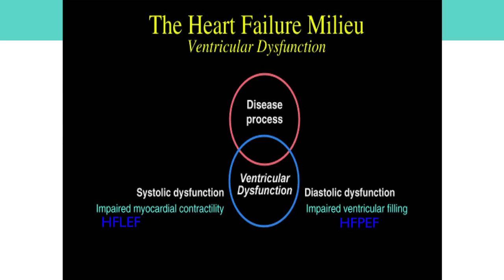So ventricular dysfunction has two main functional types. The first is pure diastolic dysfunction with normal contraction, also known as heart failure with preserved ejection fraction. The other type is systolic dysfunction, where there is weakness of contraction, known as heart failure with low ejection fraction. Please remember that all systolic dysfunction has some degree of diastolic dysfunction.